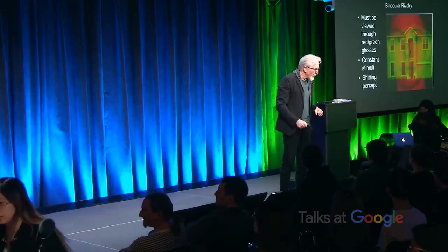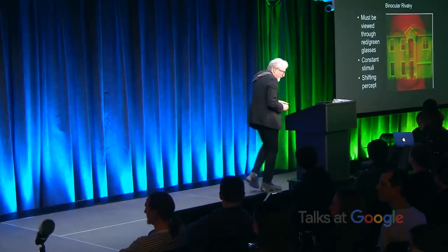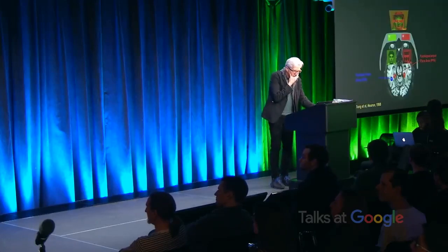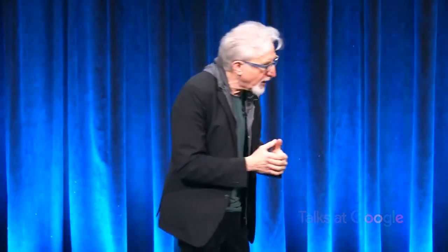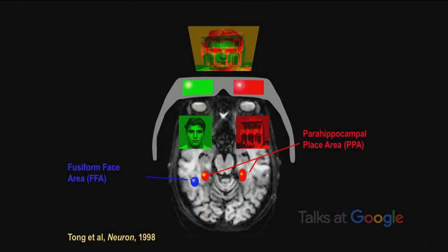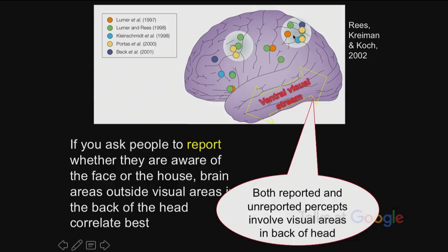It's called binocular rivalry. You have incompatible representations, and the processing streams involving both eyes duke it out. This is a terrific thing for studying consciousness, because you have an unchanging input with a changing conscious percept. That's allowed people to identify areas more active when you're conscious of a face — like the fusiform face area — and other areas more active when you're conscious of a house. When you ask people to report whether they see a face or a house, frontal and parietal links are the key thing, and that has been taken to support the global workspace idea.